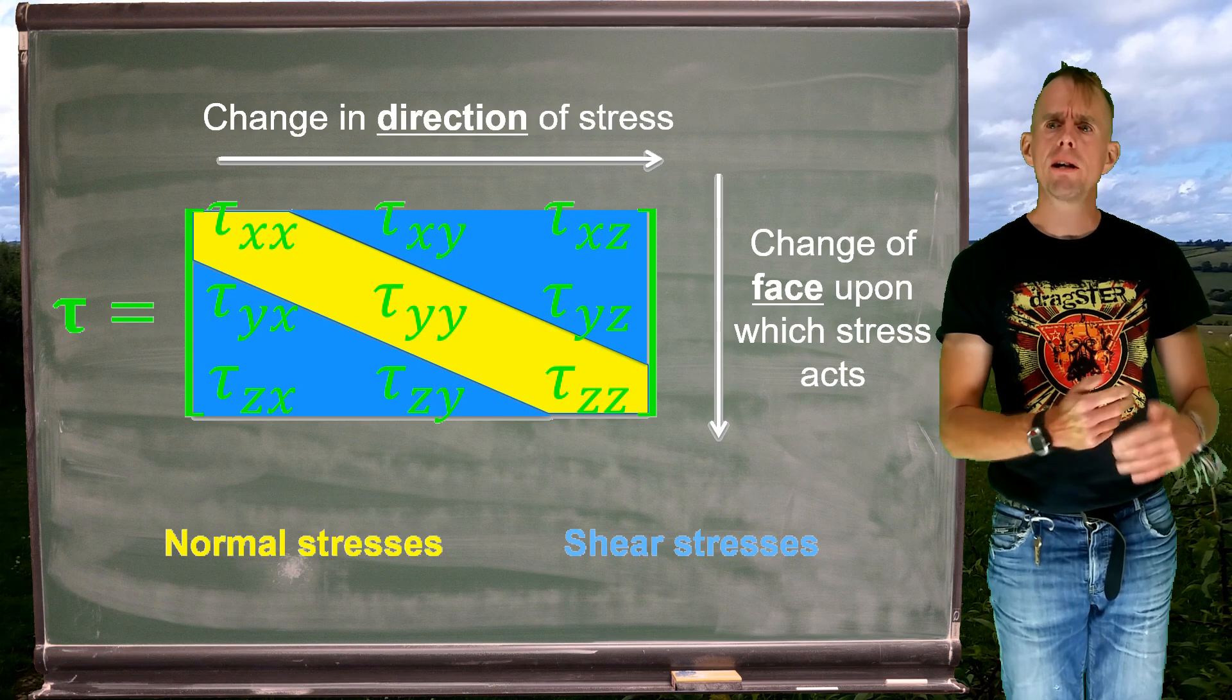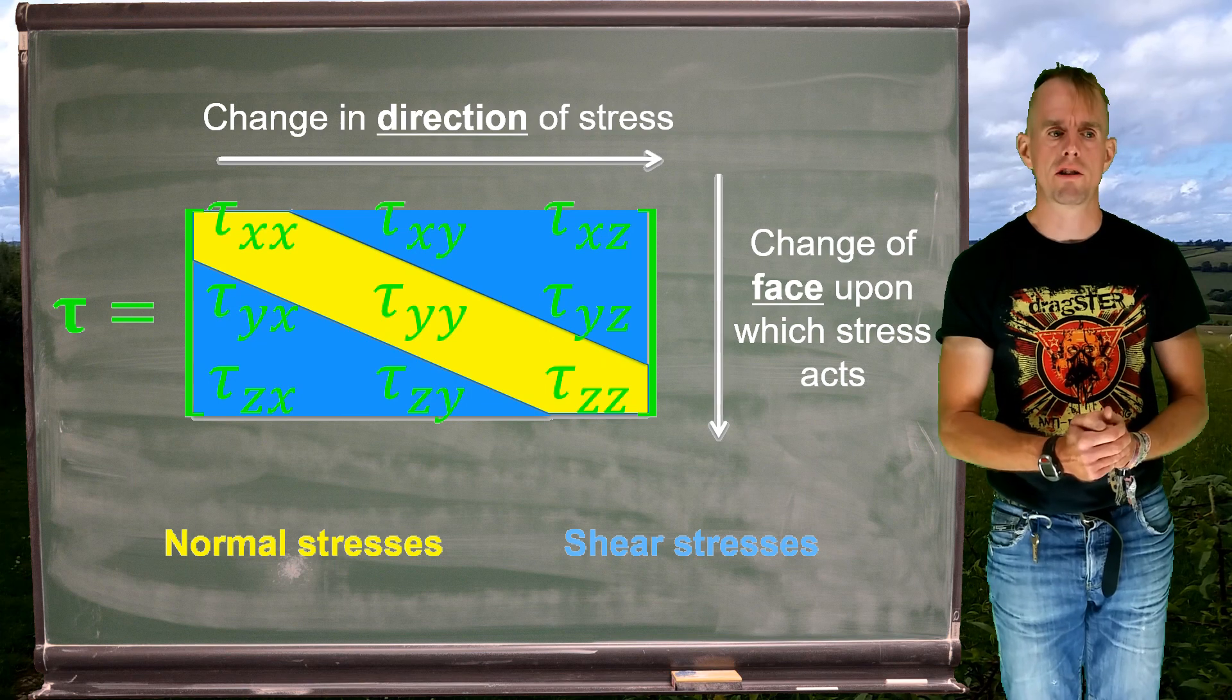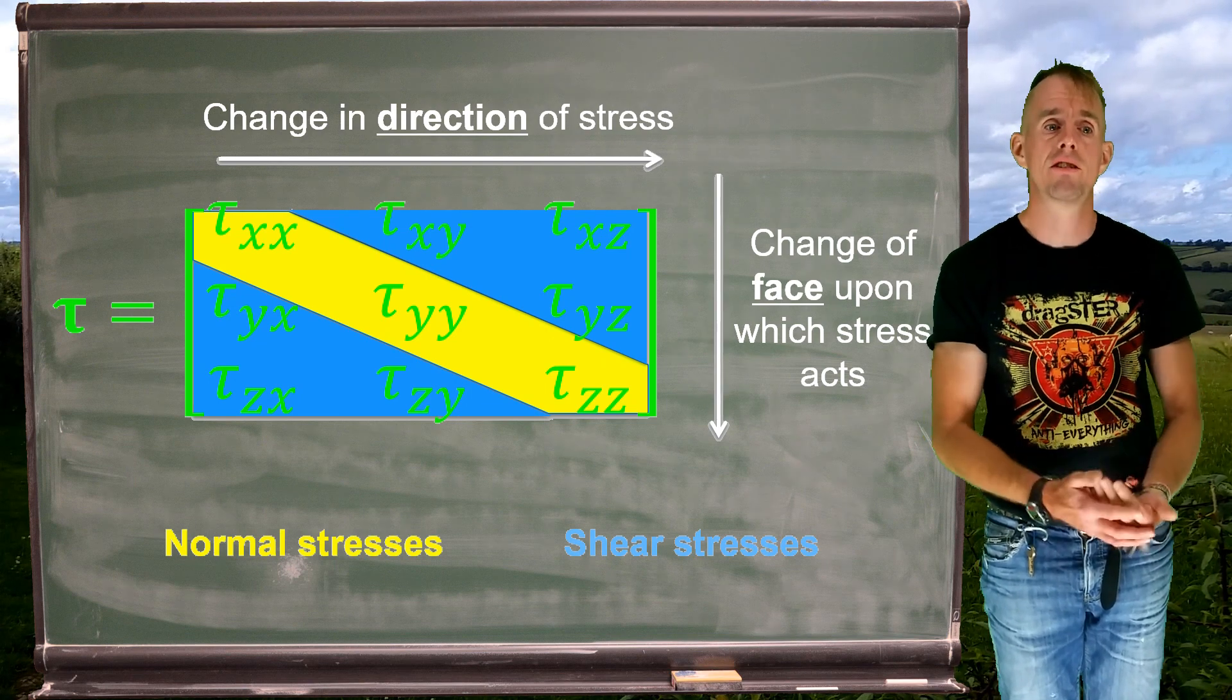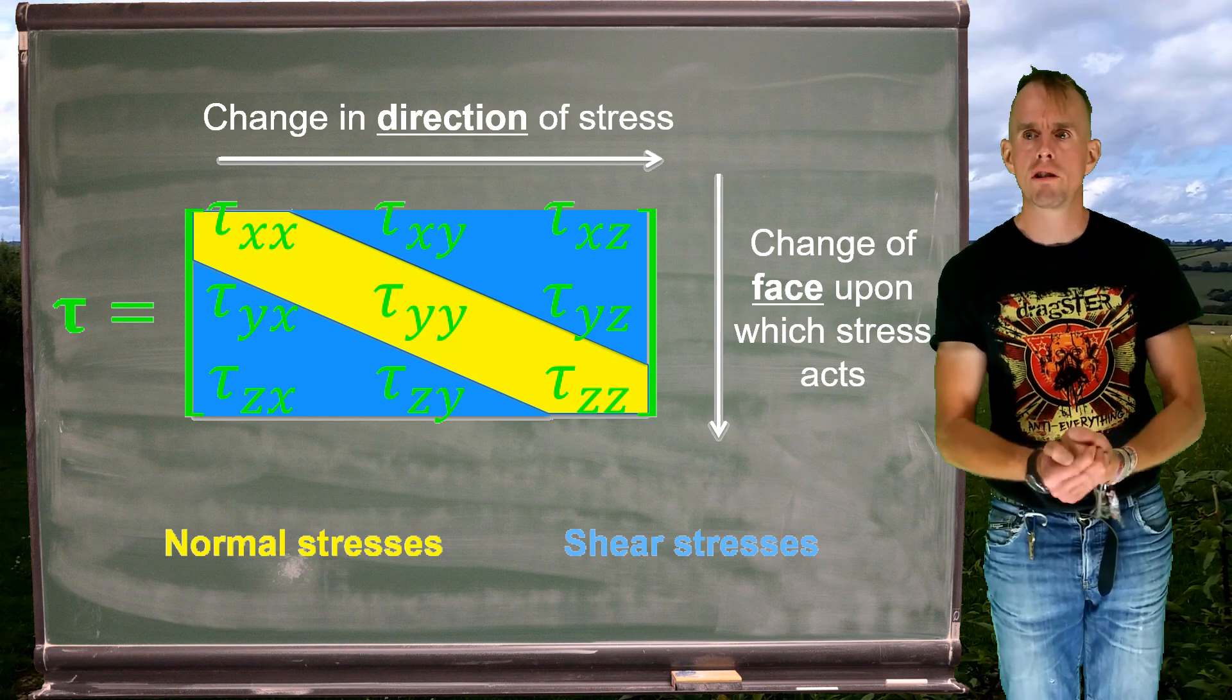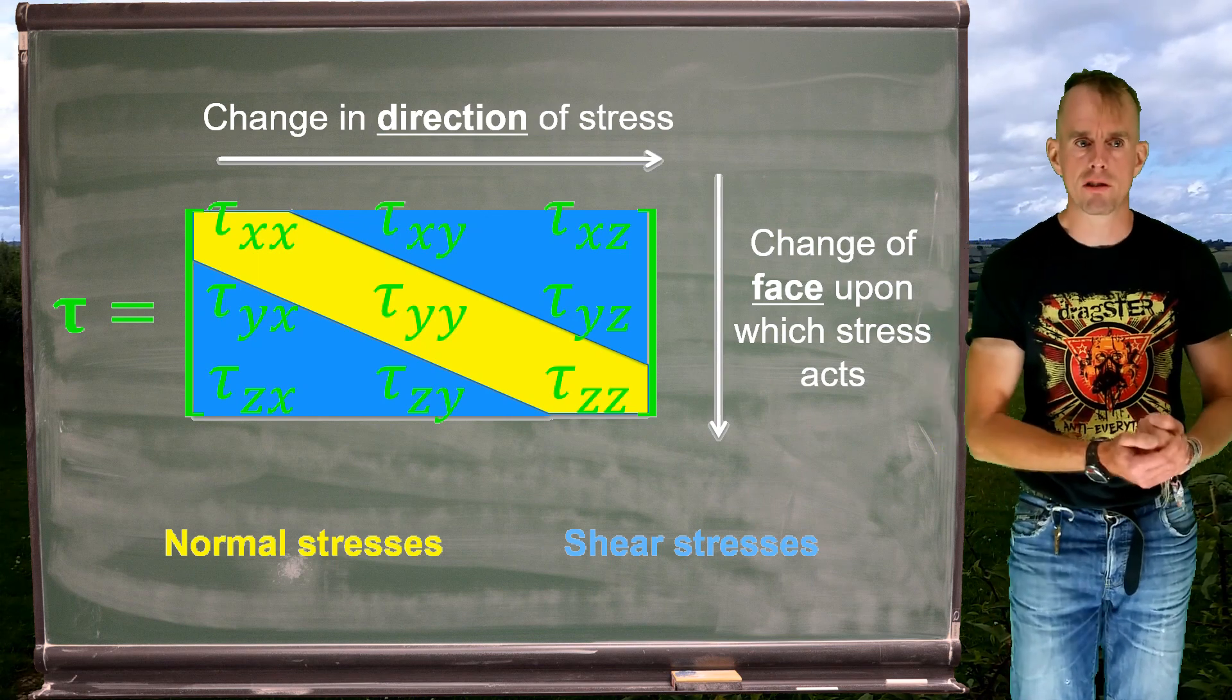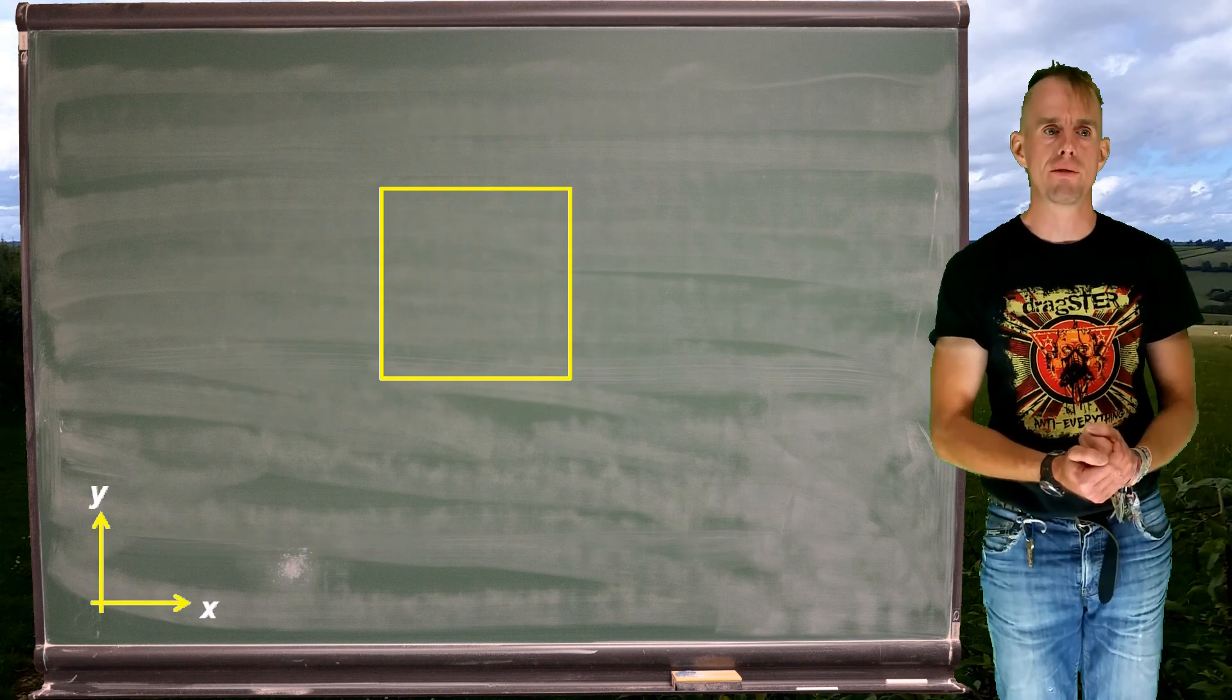Now, if we're going to do calculations with a stress tensor, or even if we just use a stress tensor to get information in a mental model, we need to know which stresses are positive and which stresses are negative. And so, of course, there is a convention for this.